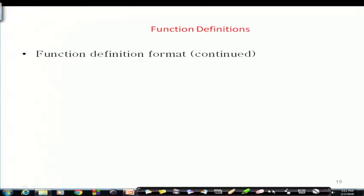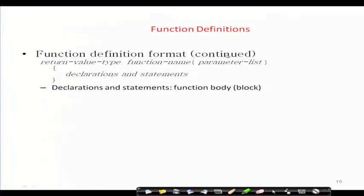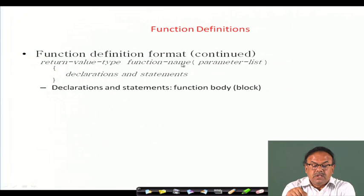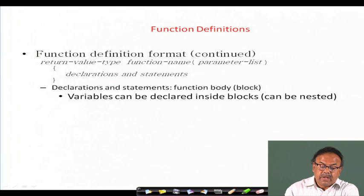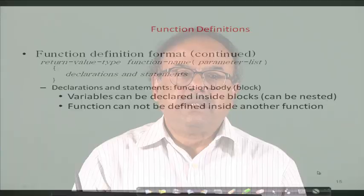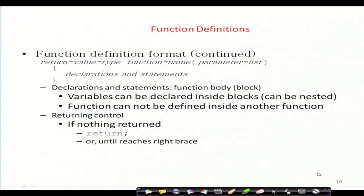In the earlier example, the function was written first and then main. Now, summarizing function definitions: a function name is preceded by a return value type, followed by the declaration statement, and then the function body. Variables can be declared inside blocks; blocks can be nested. Importantly, a function cannot be defined inside another function. If nothing is returned, just write return; if something is returned, write return followed by that expression.